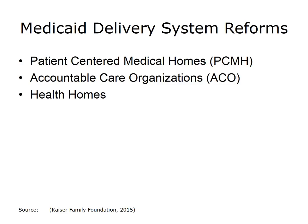Accountable care organizations within Medicaid are essentially groups of providers that have agreed to accept responsibility for the provision of care for a defined population. Some states are pursuing ACOs for their Medicaid population, building on existing systems such as PCMHs. Health homes, defined in the ACA, are aimed at Medicaid beneficiaries with multiple chronic conditions, including mental illness, and must provide comprehensive care management, care coordination, health promotion, transitional care, referrals to community services, patient and family support, and use of health information technology.